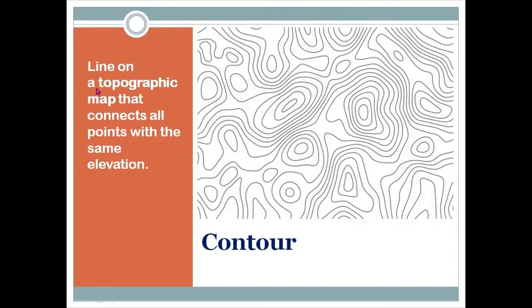We have another one called the contour. A contour is a line on a topographic map that connects all points with the same elevation. You might have seen topographic maps showing the elevation of earth's features. Contour lines are those lines which connect points of a similar height or elevation. So a contour line shows features having a similar elevation on topographic maps.